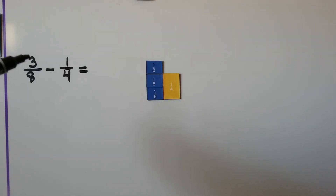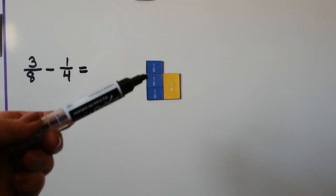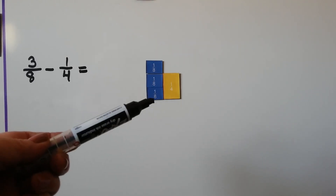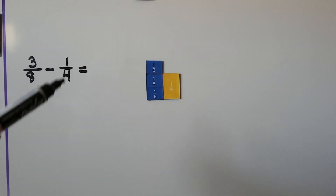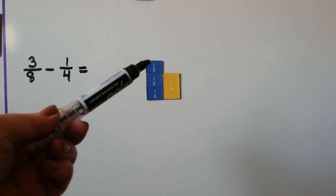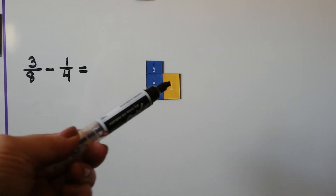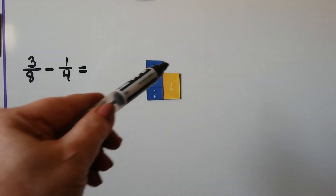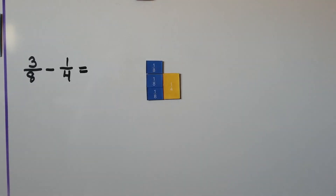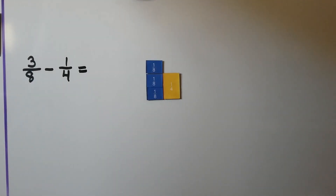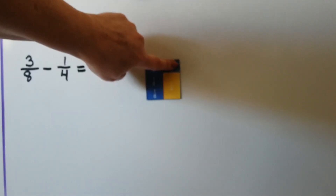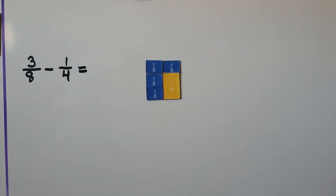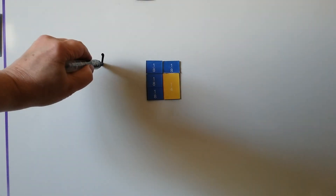Now we need to find the difference between three eighths and one fourth. Three eighths minus one fourth means the difference between three eighths and one fourth. We need to find this little area right here. And if you look carefully at our model, it looks like we could just stick a little eighth in here. That's the difference — the difference is one eighth.